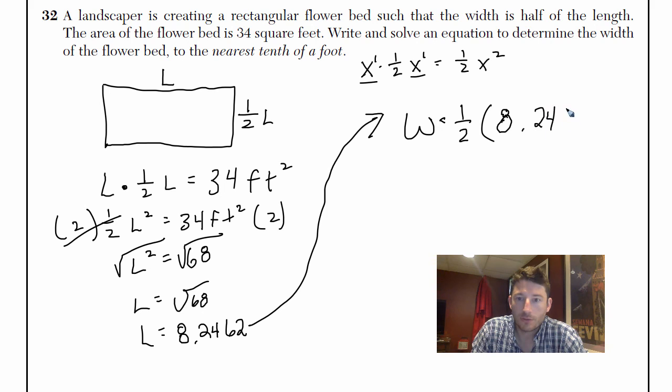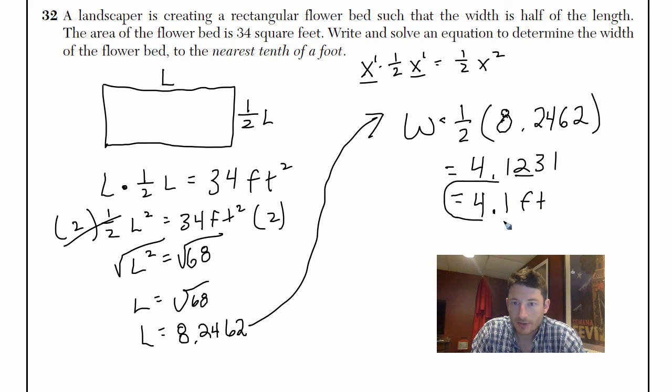So I'm just going to take half of that, times 0.5. That gives me 4.1231. And I've got to round it, right, to the nearest tenth of a foot. Alright, so that's 4.12, so it's 4.1 feet. That's your answer there.